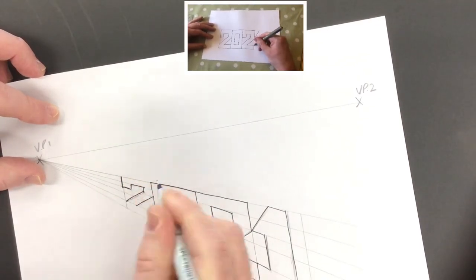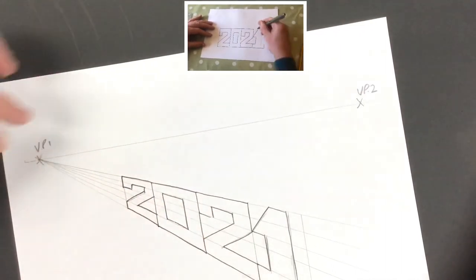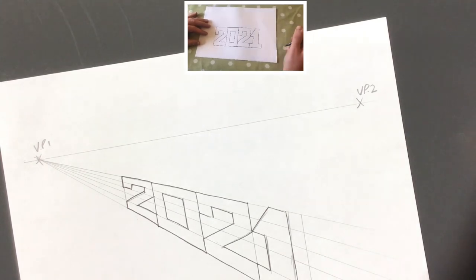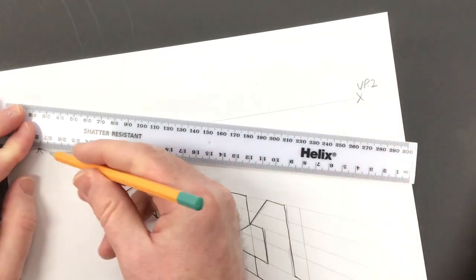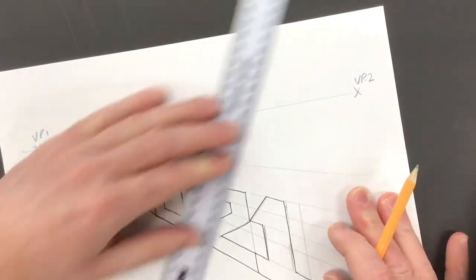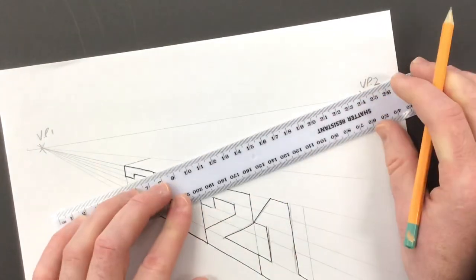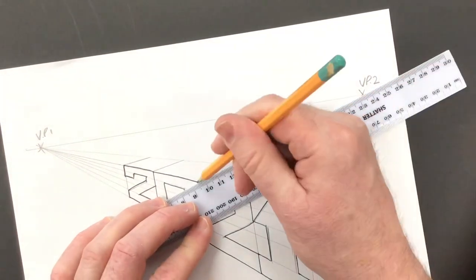At this stage what you've got is essentially a one-point perspective drawing. What we're going to do now is add in the three-dimensional element by using the second vanishing point. First thing you want to do is draw another line from VP1 running above your lettering, and then again from all the points of detail.